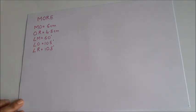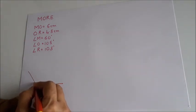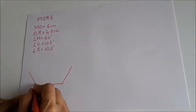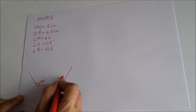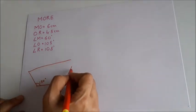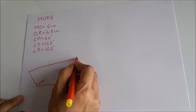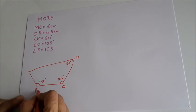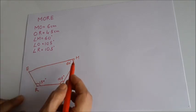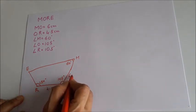Our first job is to construct a rough figure. We draw a rough figure where both base angles are 105 degrees and one angle is 60 degrees. So we label M as 60 degrees, O as 105 degrees, R as 105 degrees, and E. In quadrilateral MORE, OR is 4.5 cm and OM is 6 cm.